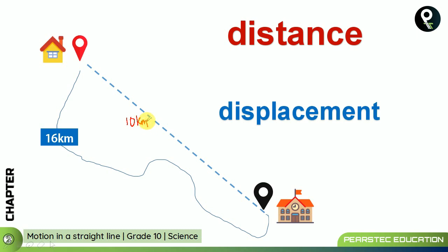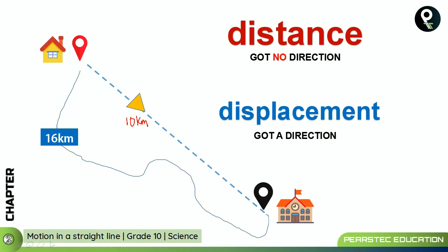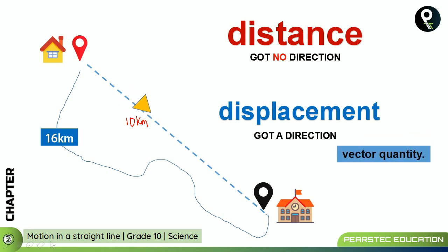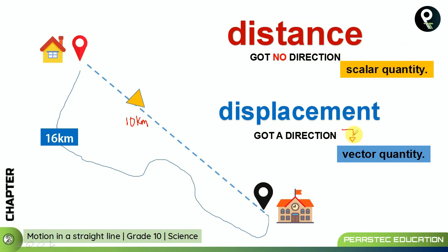Now let's come to a better understanding of the difference between distance and displacement. Displacement has a direction — therefore it is known as a vector quantity. Distance has no direction — therefore it is known as a scalar quantity.